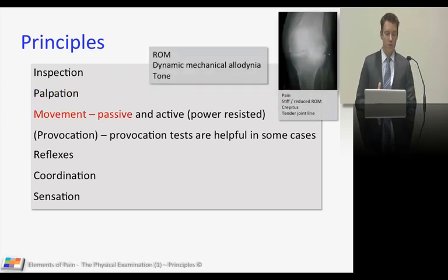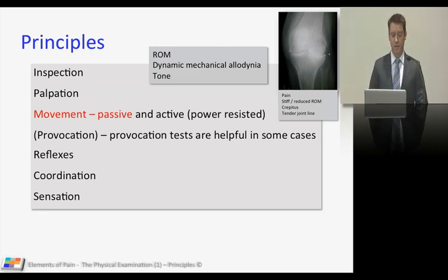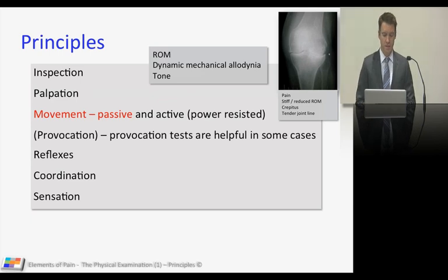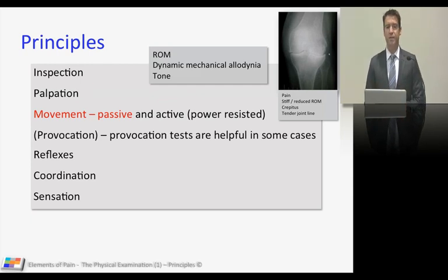Now you're going to move on to moving. You're going to start off with passive movement of patients and then move on to the active or power-resisted movements. With passive movement, you really want to define the range of movement of that joint or body part. If it's painful when it moves, there's probably some dynamic mechanical allodynia. Tone is included for completeness, but it doesn't form part of most of our examinations — when you touch your patients, you've got an idea about their tone anyway.